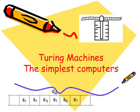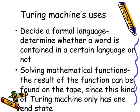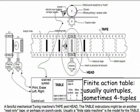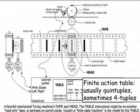A Turing machine is a system of rules, states and transitions. It is used to decide the formal language or solving mathematical functions. Turing machines have a tape that is divided into cells, each containing a symbol, a read/write head that moves the tape left or right one cell at a time, a finite table of instructions, and a state register that stores the state of the Turing table.